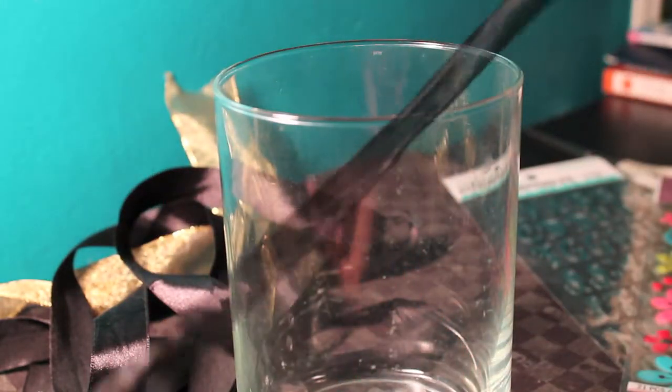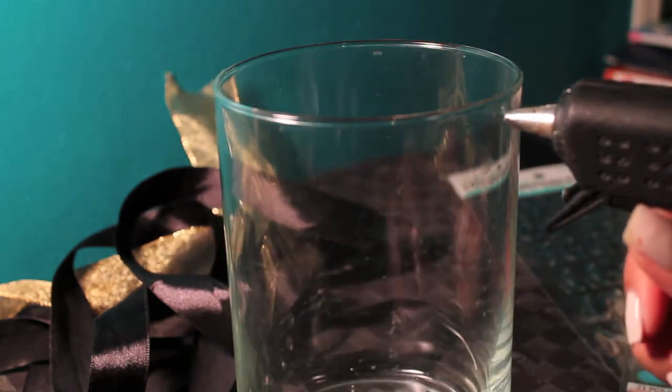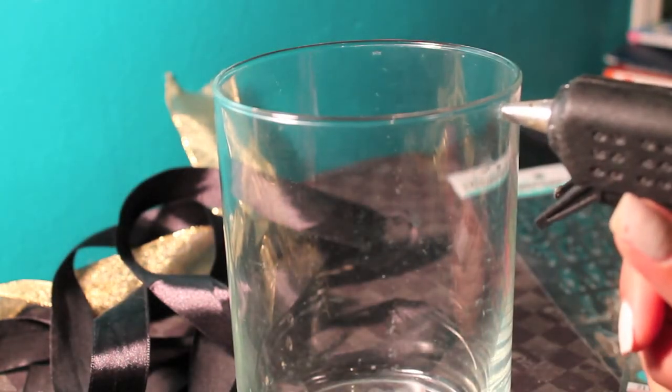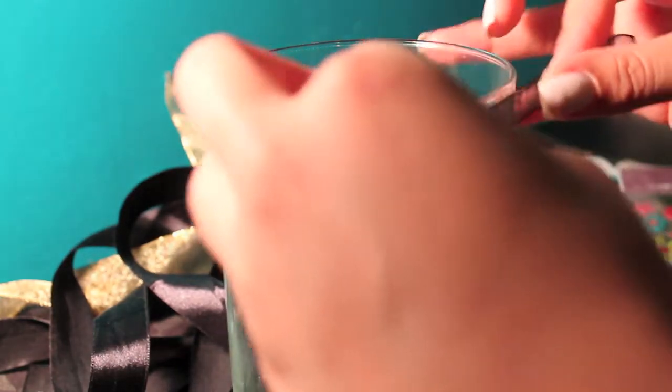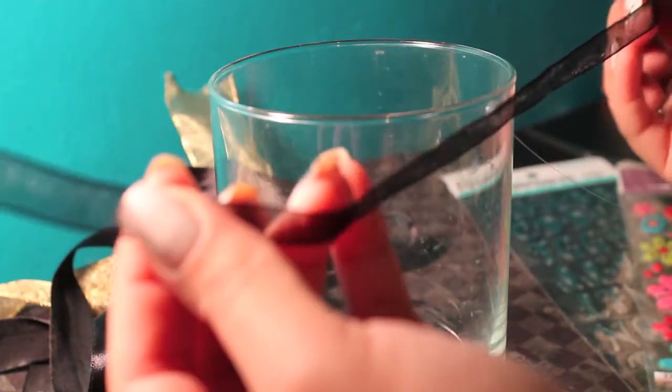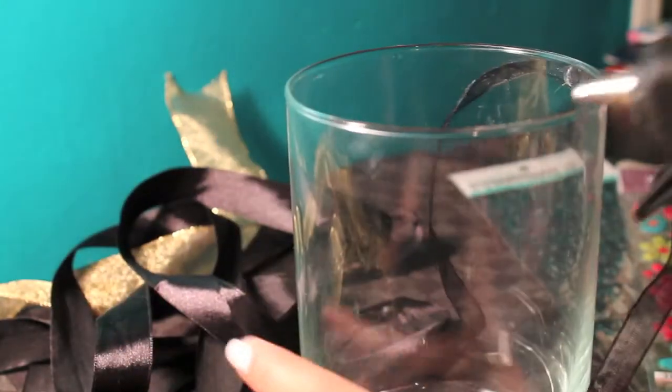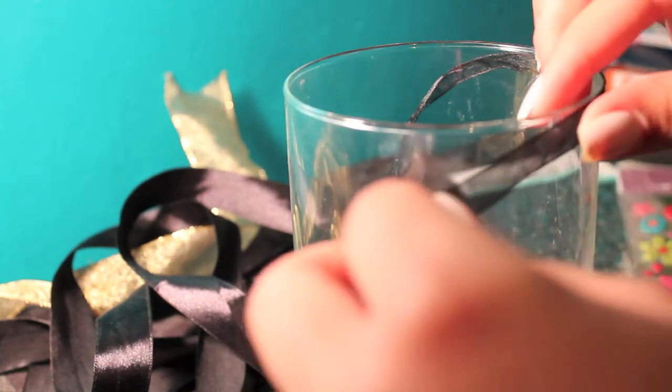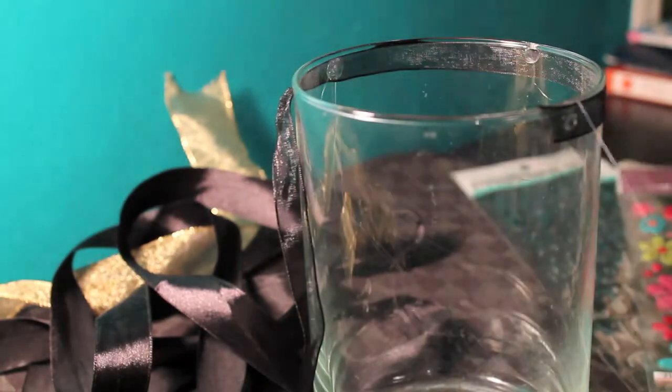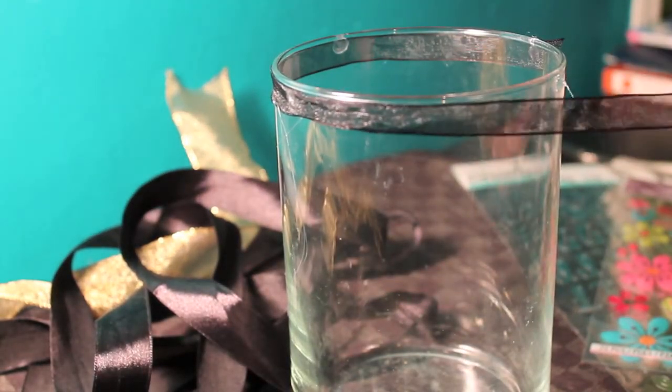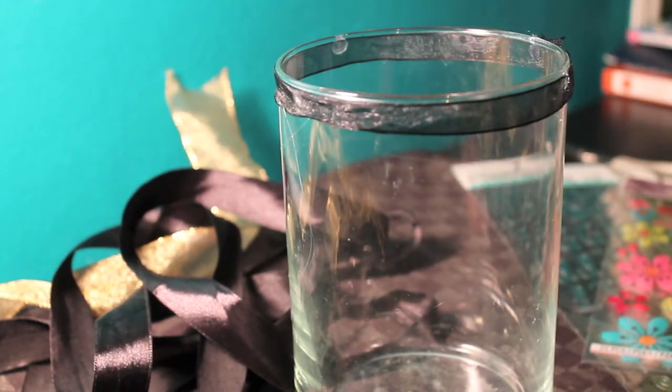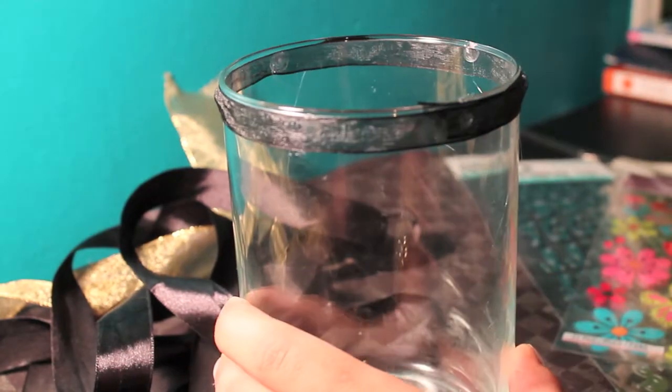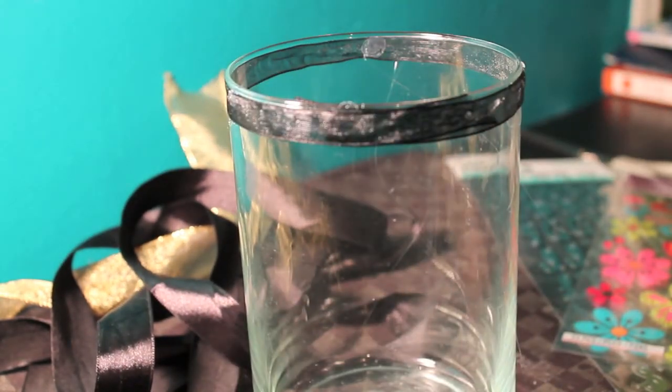So start with a small ribbon. This ribbon we are going to use it at the top of the vase. You're going to make little dots of glue all over the vase. This way the ribbon will stay in place. Measure it so that the ribbon is evenly spread out around the vase. And keep creating dots of glue all around. Now step one is finished. Let's move on to the next step.